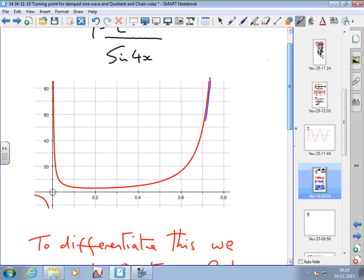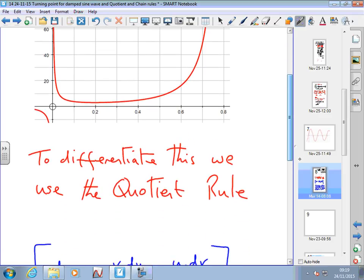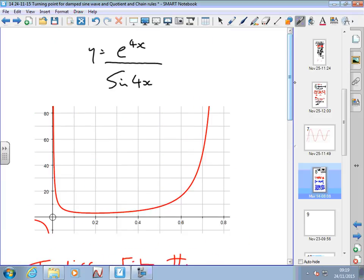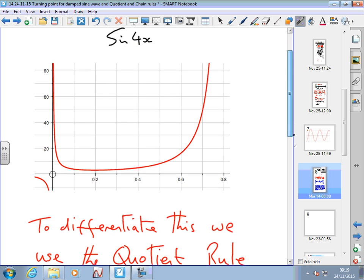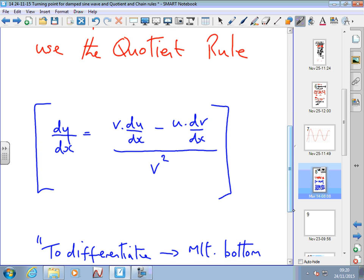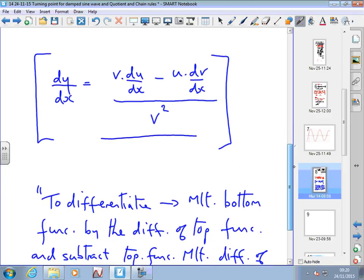To differentiate this function, I need to use the quotient rule, which is used when I've got one function divided by another. Quotient is to do with division, so if you've got one function divided by another, you apply the quotient rule. Here it is in mathematical symbolism.